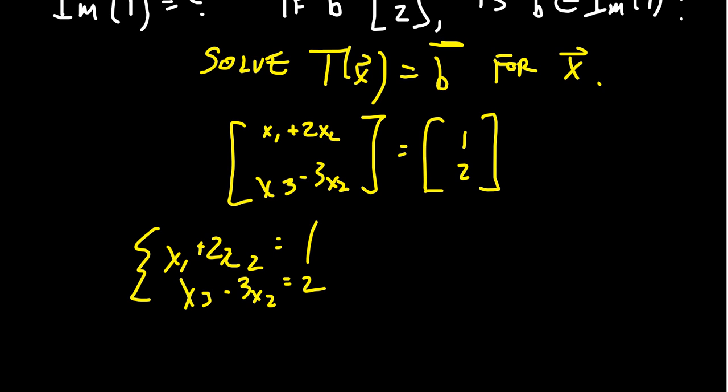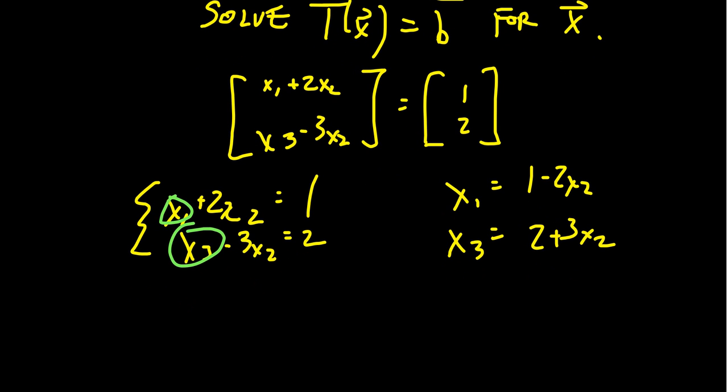If you solve this by substitution, let's solve for x₁ in the first equation and x₃ in the second equation. We are going to get that x₁ is equal to 1 - 2x₂, and we're going to get that x₃ is equal to 2 + 3x₂. And so in this, again, in this situation, we see that x₂ can be treated as an independent variable. And the x₁, x₃, these are dependent variables in terms of solving the system of linear equations.